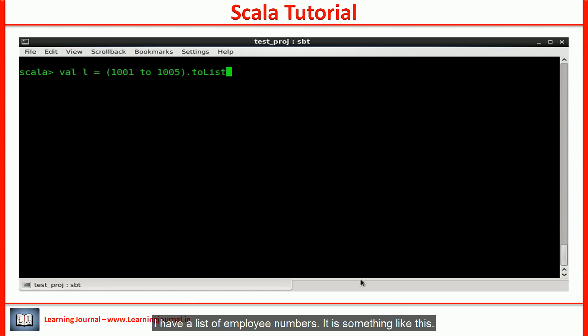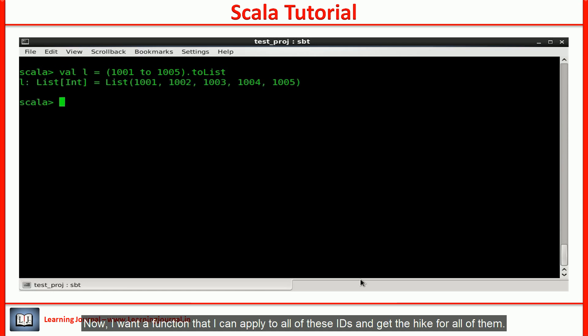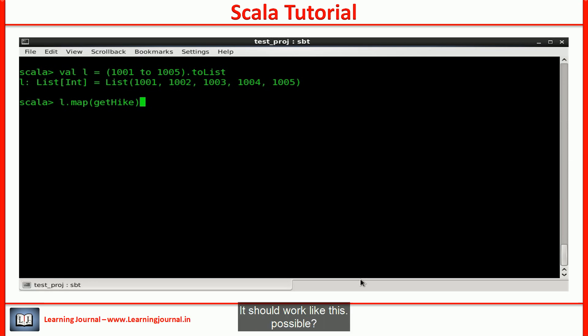Let me give you a simple requirement. I have a list of employee numbers. It is something like this. Now, I want a function that I can apply to all of these IDs and get the hike for all of them. It should work like this.